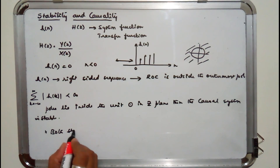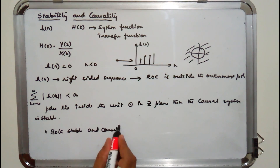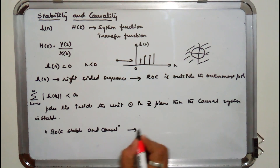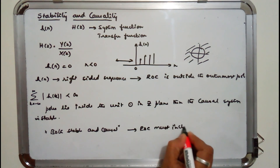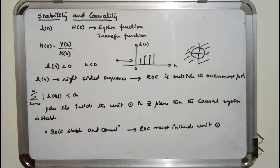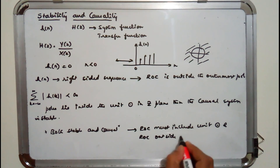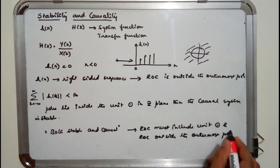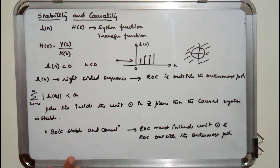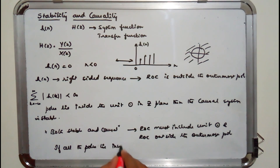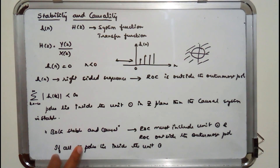For a system to be both stable and causal, the necessary and sufficient condition is that the ROC must include the unit circle and the ROC must be outside the outermost pole. Equivalently, a system is both stable and causal if all the poles lie inside the unit circle.